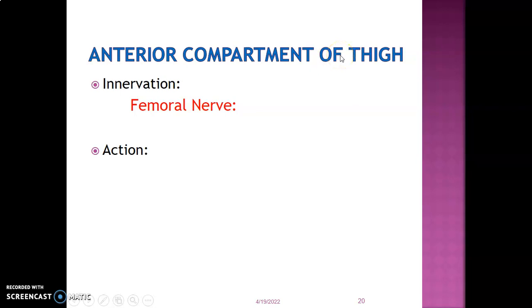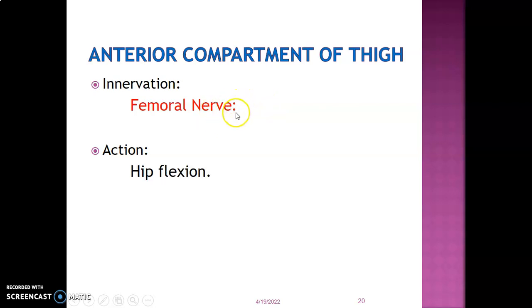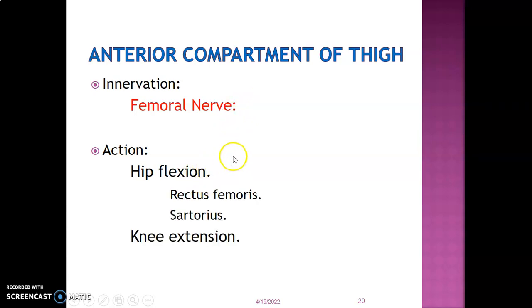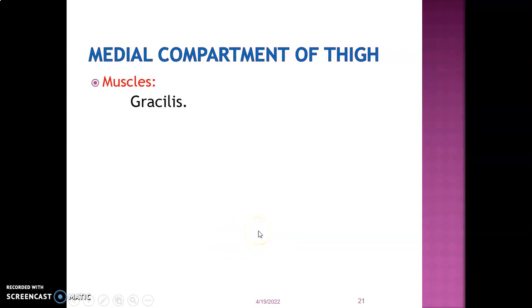The innervation of the anterior compartment of the thigh is mainly the femoral nerve, root value L2 to L4. It innervates iliopsoas and the muscles of the anterior compartment including the quadriceps. Hip flexion is caused mainly by iliopsoas and sartorius, and knee extension is caused by the quadriceps muscles.